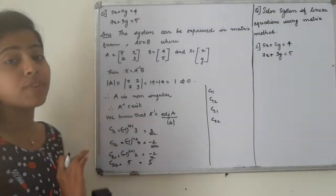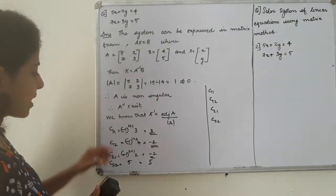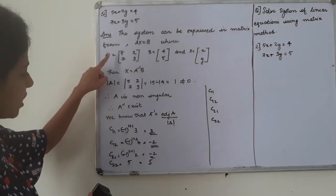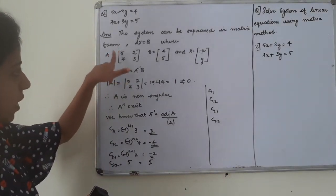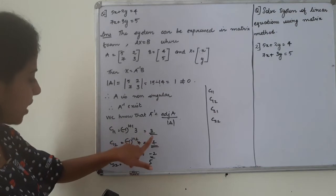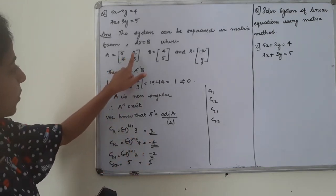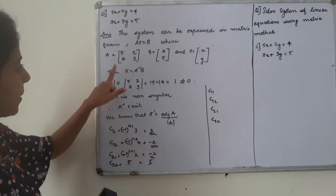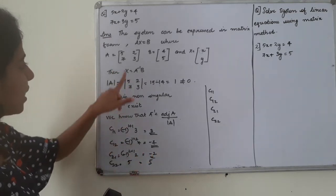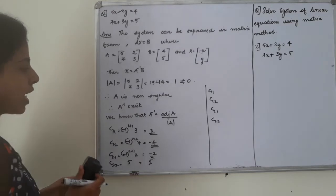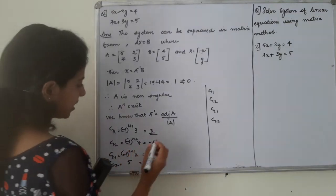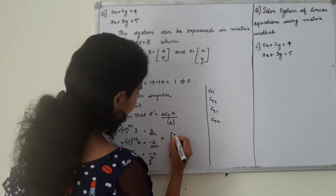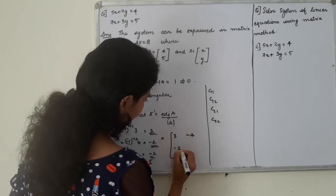So, we value the factors. The factors, C11, we value the column. Then, we value the column. Now, we value the matrix. Cofactor matrix is 3, minus 7, minus 2, 5.